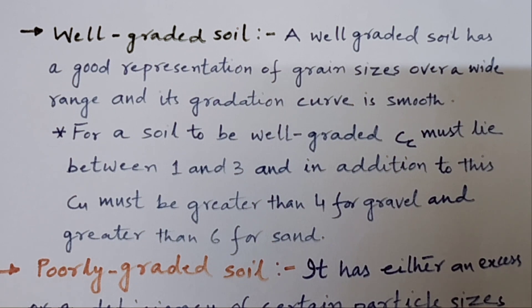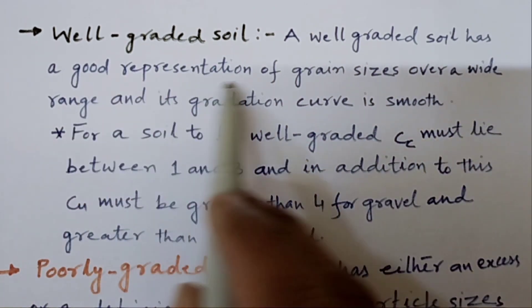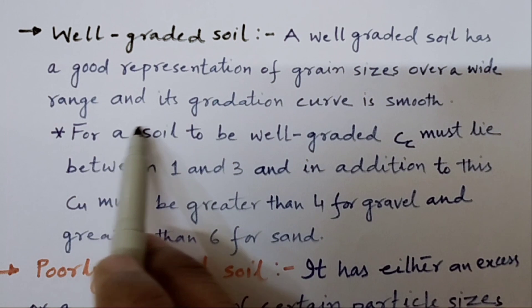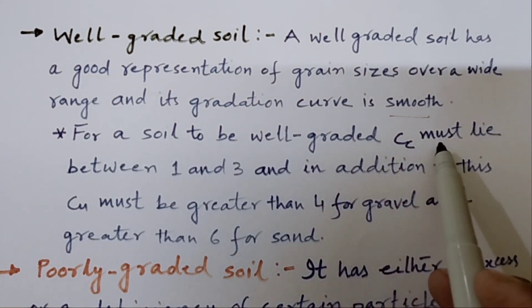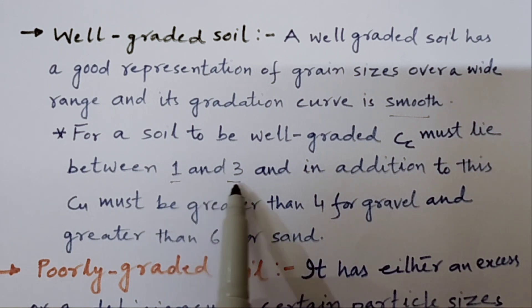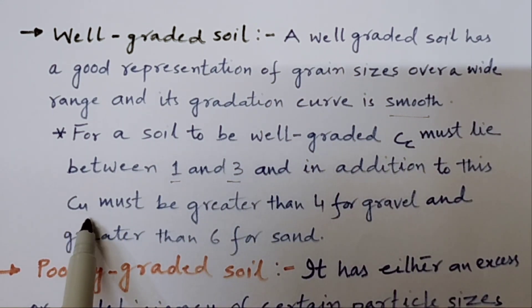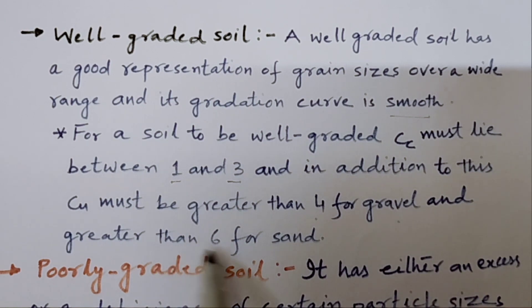Now, based on the different sizes in the soil, we have two definitions. That is, well graded soil. A well graded soil has good representation of grain sizes over a wide range and its gradation curve is smooth. A well graded soil, Cc should lie between 1 and 3. If you have calculated coefficient of curvature it must be within 1 and 3 and in addition to this Cu, the coefficient of uniformity must be greater than 4 for gravel and greater than 6 for sand.